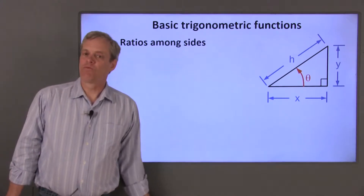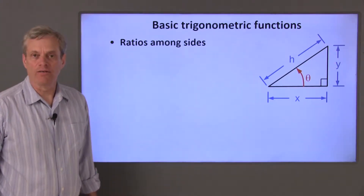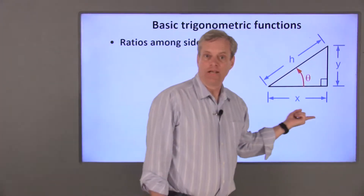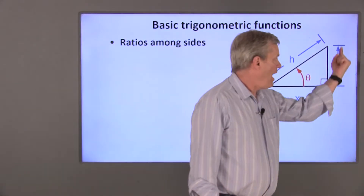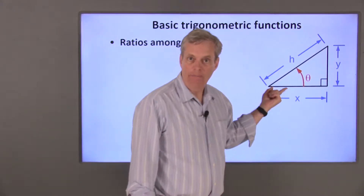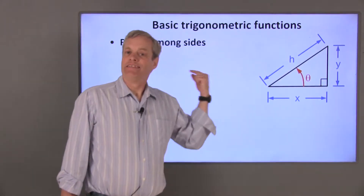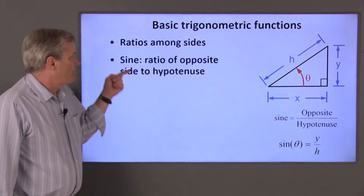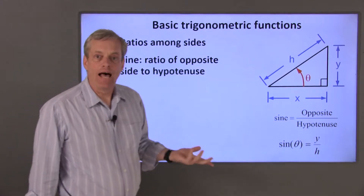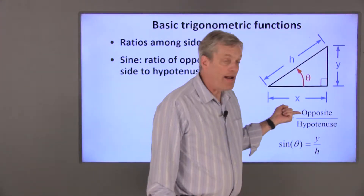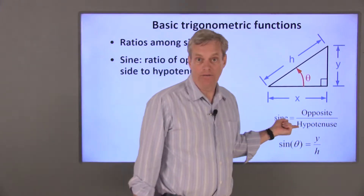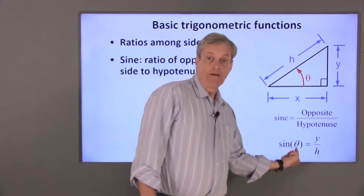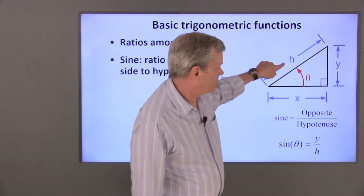Trigonometric functions relate the ratios of the lengths of the sides of a right triangle. I'll call the length of the hypotenuse H. For this angle, X is the length of the side adjacent to theta and Y is the length of the side opposite to the angle theta. The first trig function I'll talk about is sine. The sine of an angle is the ratio of the length of the side opposite to the angle to the length of the hypotenuse. Sine is abbreviated as SIN, and for this angle theta, sine is Y divided by H.